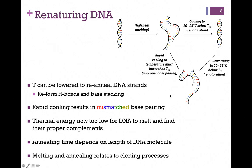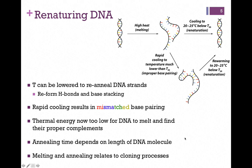That's illustrated at the bottom of the figure. If we've cooled the temperature too quickly we can't separate the two strands anymore. All we can do is re-elevate the temperature, separate the two strands again, and cool at a slower rate so they can re-anneal more accurately. The annealing time will depend on the length of the DNA molecule and the time needed to allow proper hydrogen bonding contacts to form.